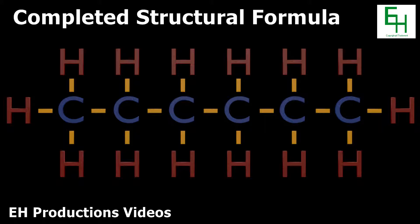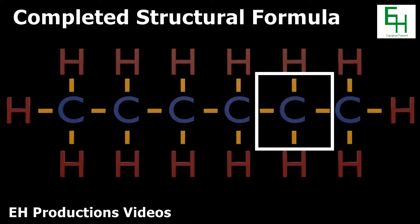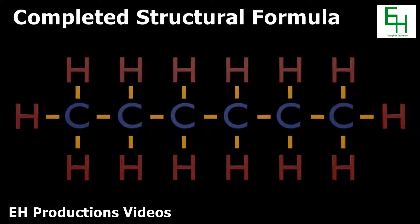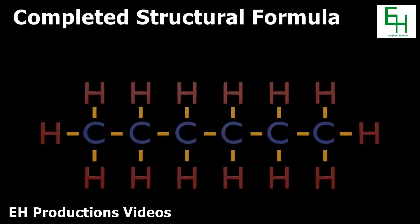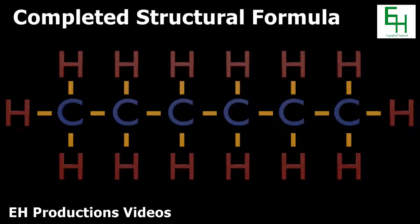When you're done with that, you have drawn the completed structural formula of hexane. Notice that each carbon has four bonds, and when you fill the outer ones with hydrogens, you'll get fourteen hydrogen atoms, just like in the formula. Now keep this image fresh, because it's useful in writing the next formula.